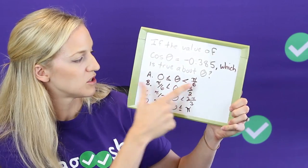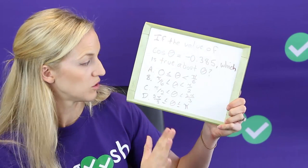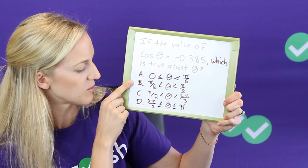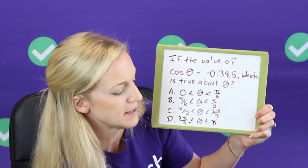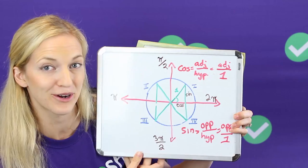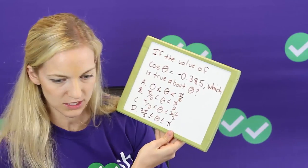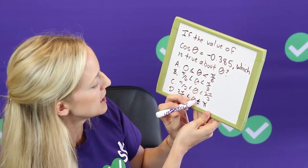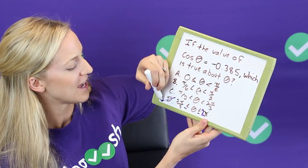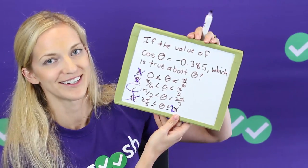So answer choice A here says zero to pi over six. So pi over six would be in quadrant one. Remember that x-axis is pi over two so this would be smaller than that so we can eliminate that one. This one would also be in quadrant one so we can eliminate that, but C covers the full range of quadrant two and three which is where cosine is negative. And D, that would be—oh that is supposed to be two pi there—two pi over three to two pi, so that would be in quadrant four and we can eliminate that one because that would be in quadrant four where cosine would be positive.